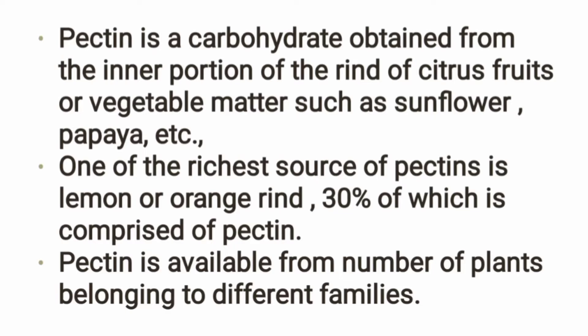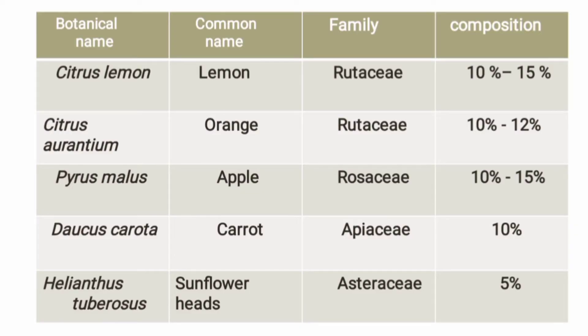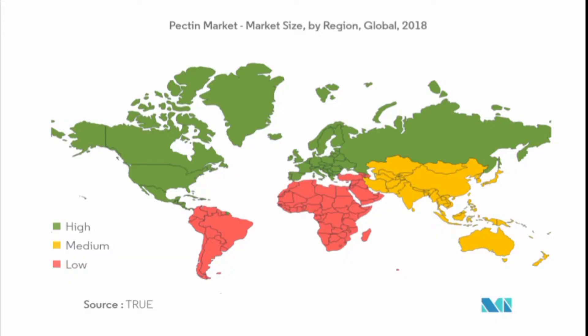There is a lot of pectin in the citrus family. Looking at the slide: lemon family belongs to Rutaceae; orange is also the same. Apple belongs to Roseaceae family. Carrot belongs to Apiaceae; sunflower to Asteraceae family. Lemon contains 10–15% pectin. On the geographical map, regions marked in green and yellow indicate areas with high pectin content.